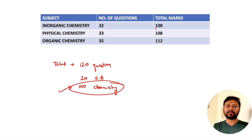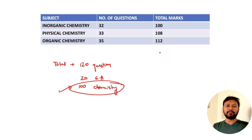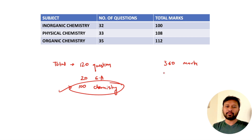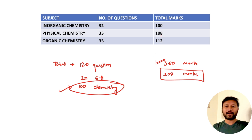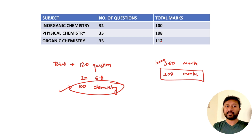As per the marks distribution: inorganic chemistry was asked for 100 marks, physical chemistry for 108 marks, and organic chemistry for 112 marks. The overall question paper is of 360 marks, though you only need to solve questions worth 200 marks. Don't be confused by the total — you have options and don't have to attempt every question. Organic chemistry clearly has the highest weightage at 112 marks, which is 12 marks more than inorganic chemistry.